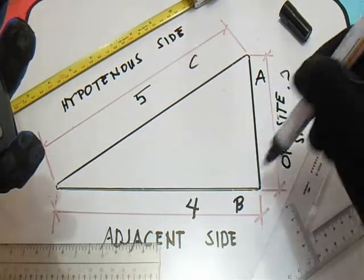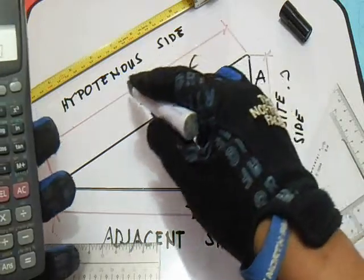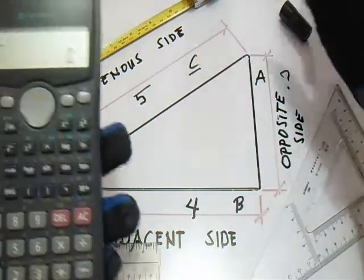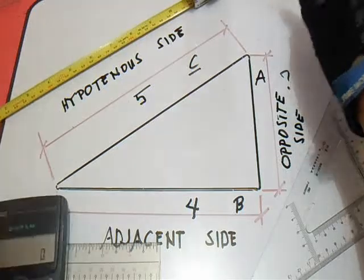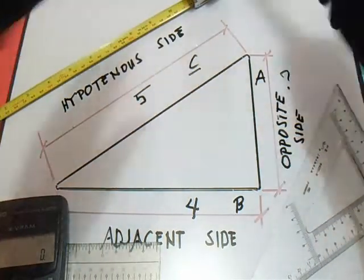A is the opposite side and B is the adjacent, and the hypotenuse is C. So to find this opposite side...